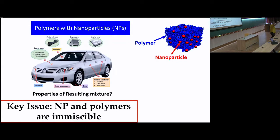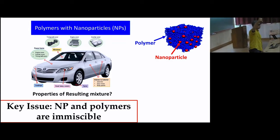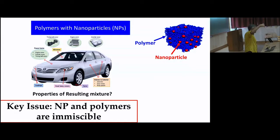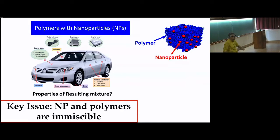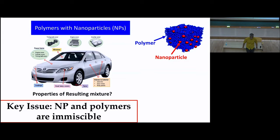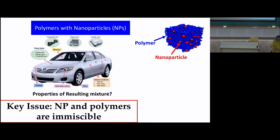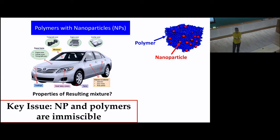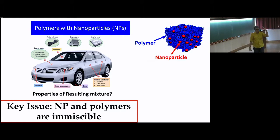The US GDP is 17 trillion. The polymer business is 500 billion dollars — about 3.5% of GDP. Composites today in the US is 1.8 billion dollars — about 4% of the polymer business. There's a huge space to grow by adding particles to polymers. You can get properties in between the two if you mix polymers and particles properly. Why is it only 4% of the polymer business?